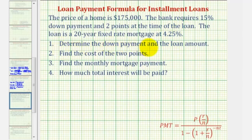Number one, we want to determine the down payment and the loan amount. Number two, find the cost of the two points. Number three, find the monthly mortgage payment. And number four, how much total interest will be paid over the life of the loan.